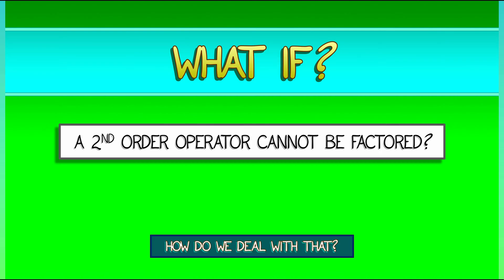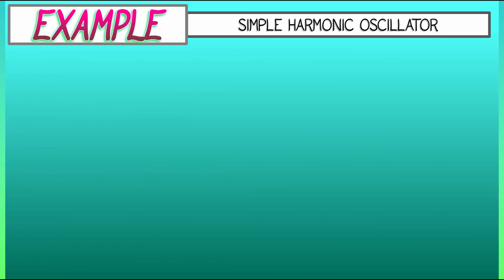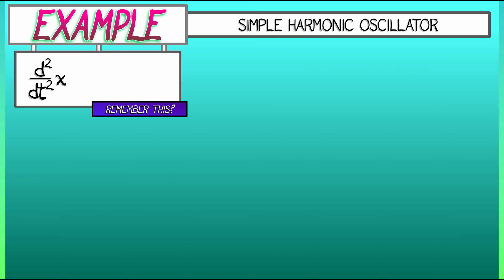What do I even mean by that? Let's do an example. Let's look back at the simple harmonic oscillator that we introduced recently. Do you remember this guy? This is where you take the second derivative of x and you get minus some constant times x. Let's rewrite that as saying plus lambda squared x equals zero.